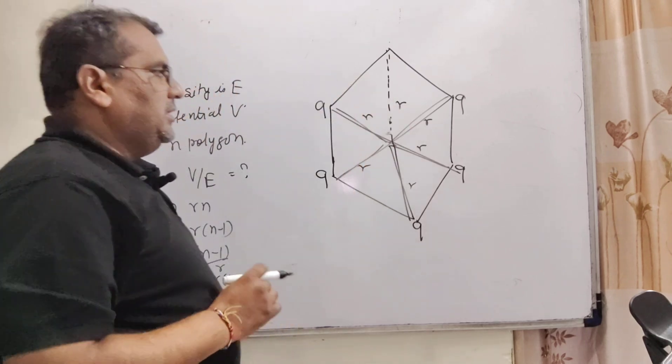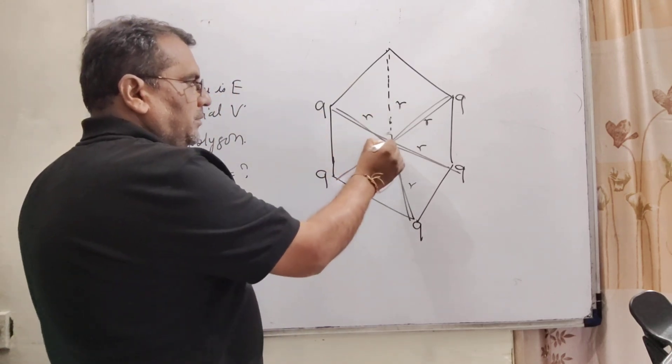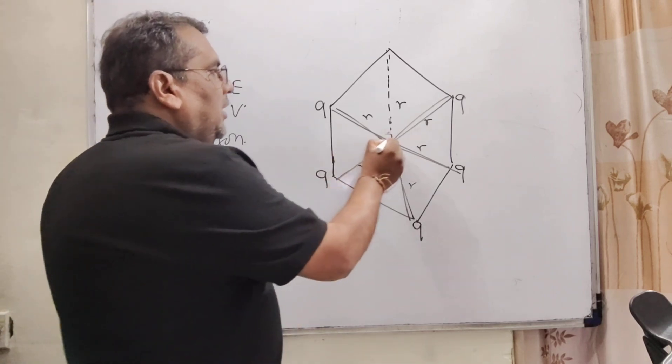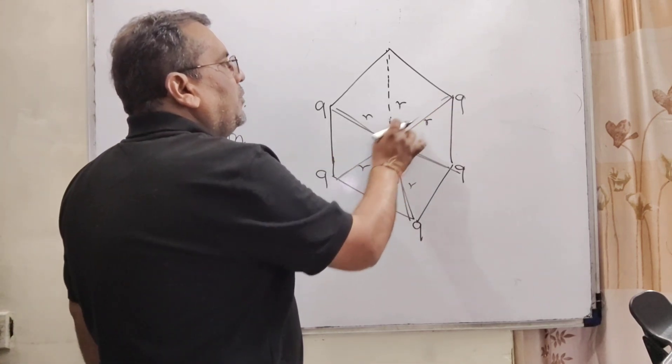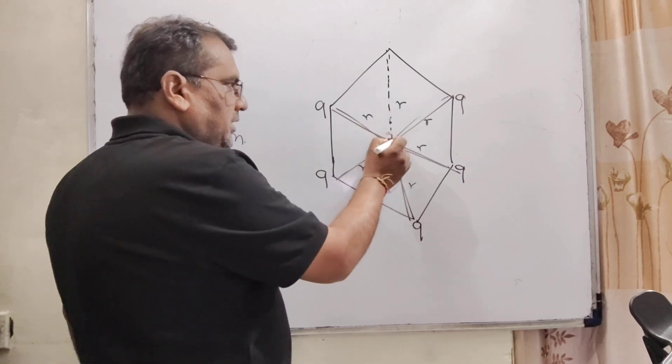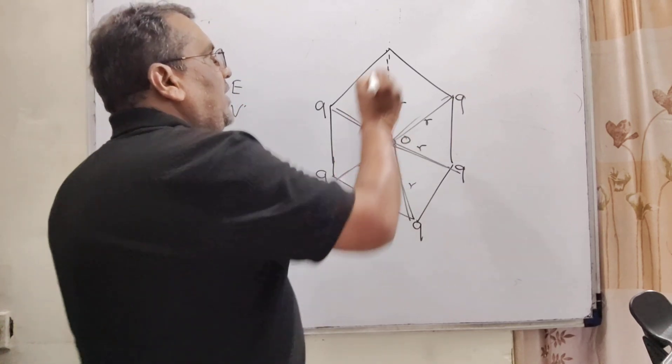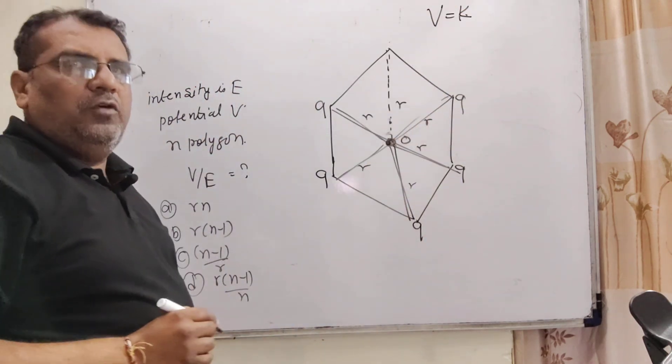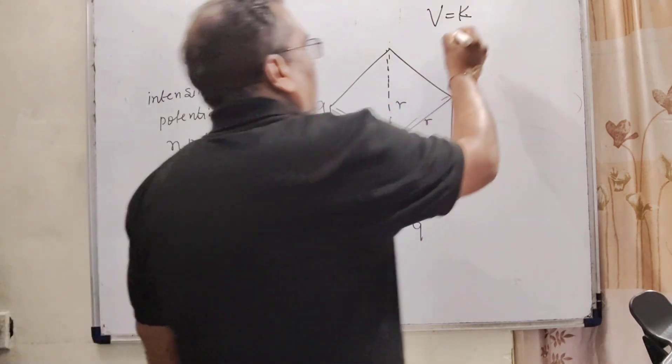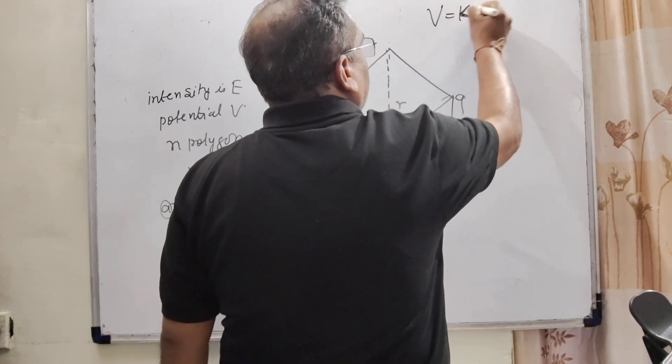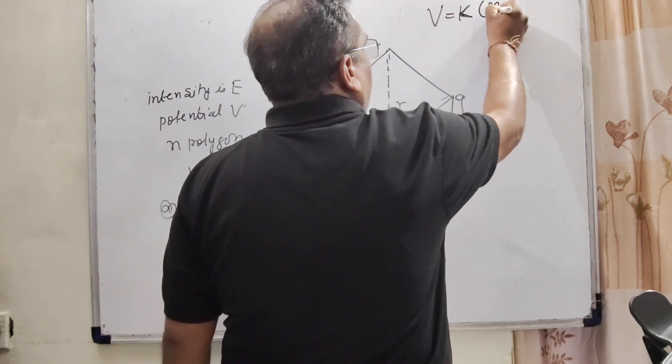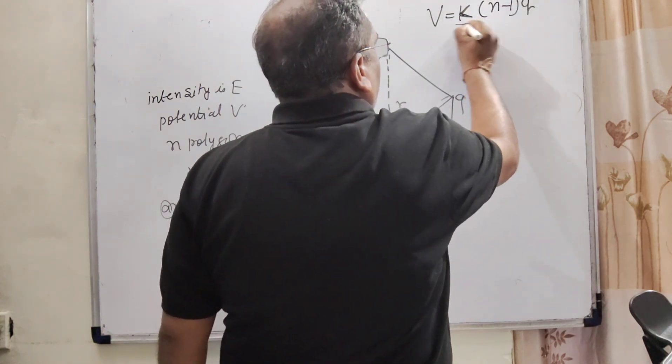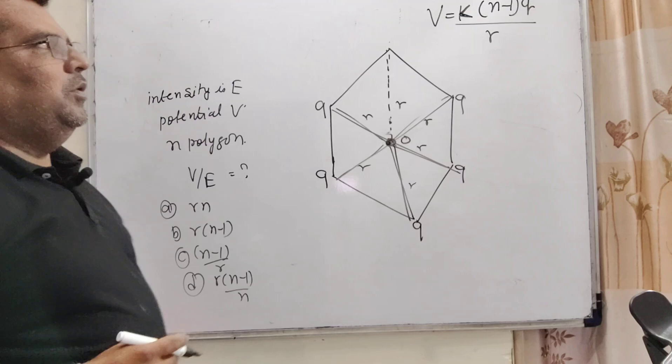So, now it is clear that here is the potential. You know potential is a scalar quantity. And so, therefore, here we have using the superimposition of all the charges at the point, this center O. So, that is we have using V equal to k. K means 1 upon 4 pi epsilon naught. And here that is n minus 1 q upon r.